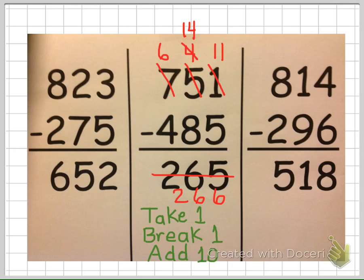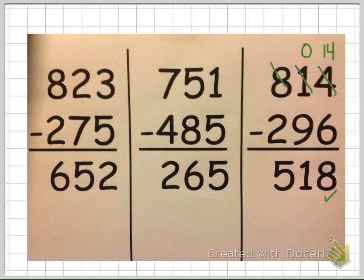Always check your subtraction work using addition. The last example was completed correctly. Regrouping was needed twice. Once from the tens to the ones place value, once from the hundreds to the tens place value.